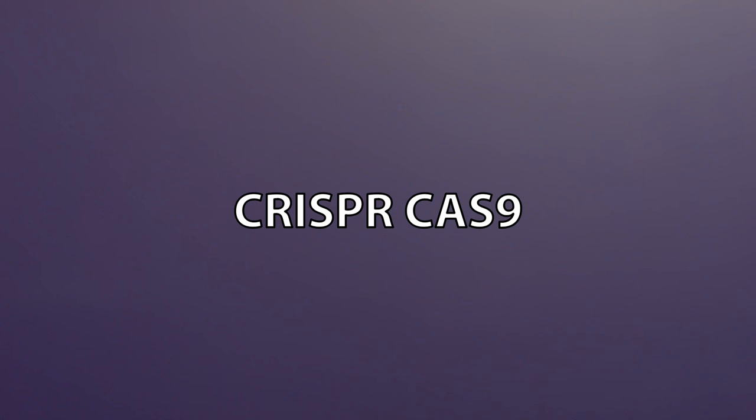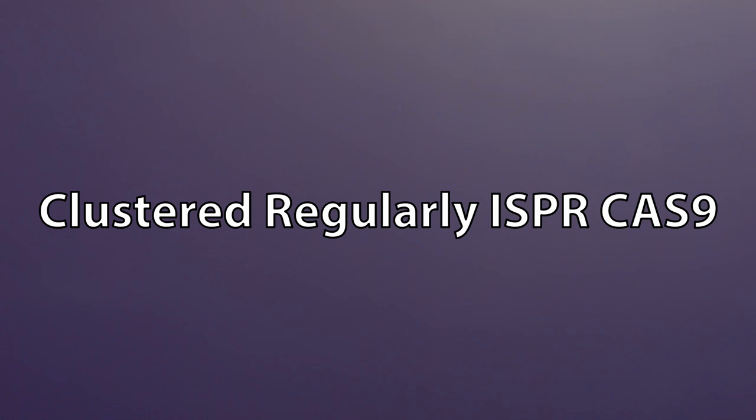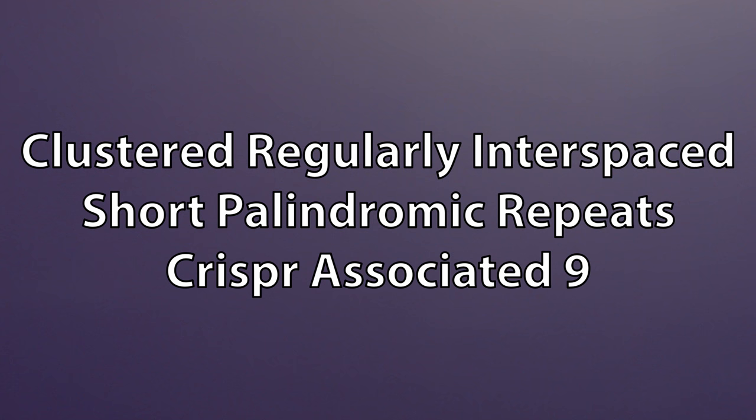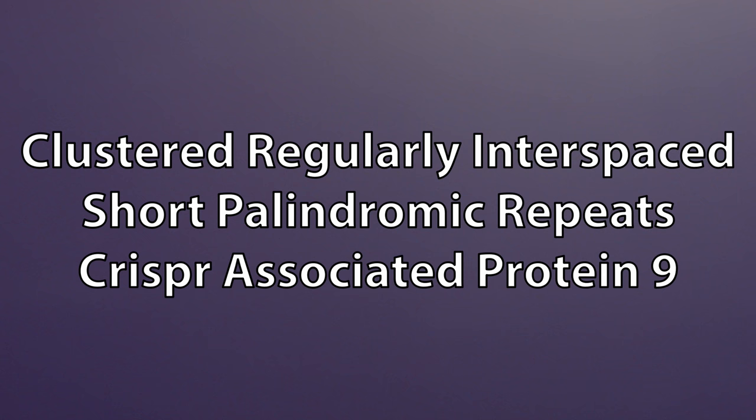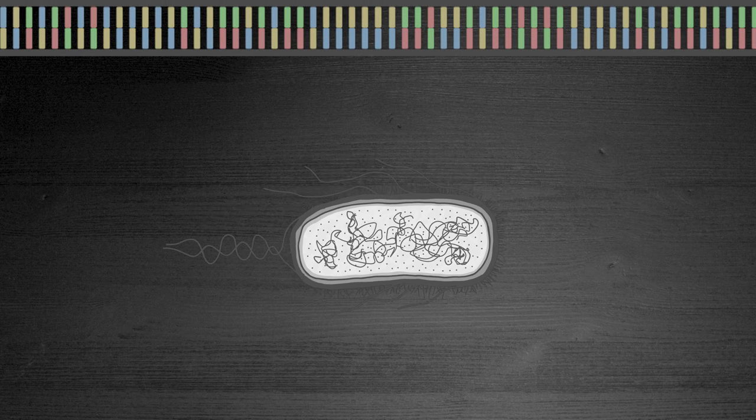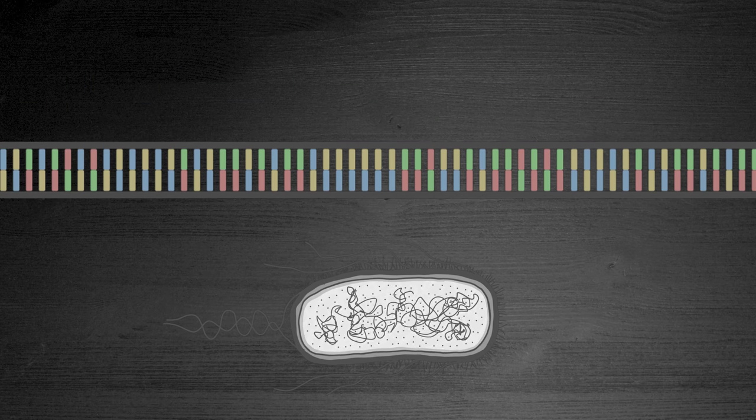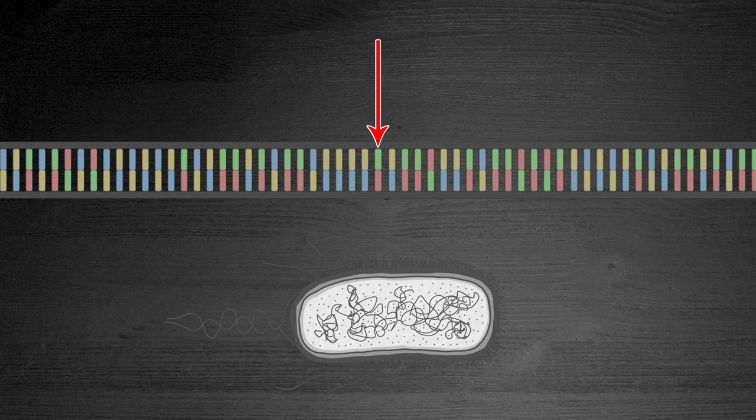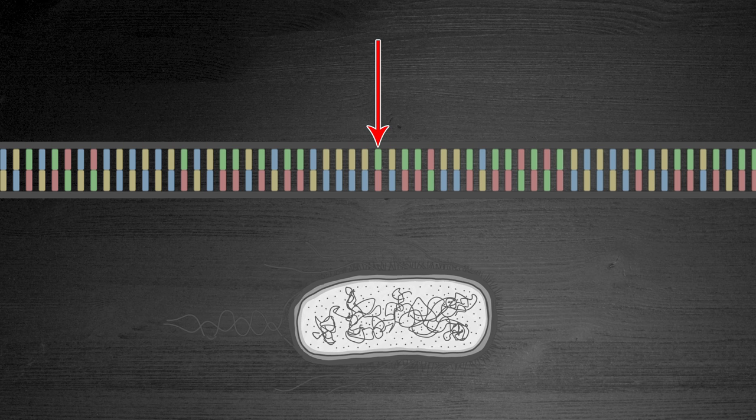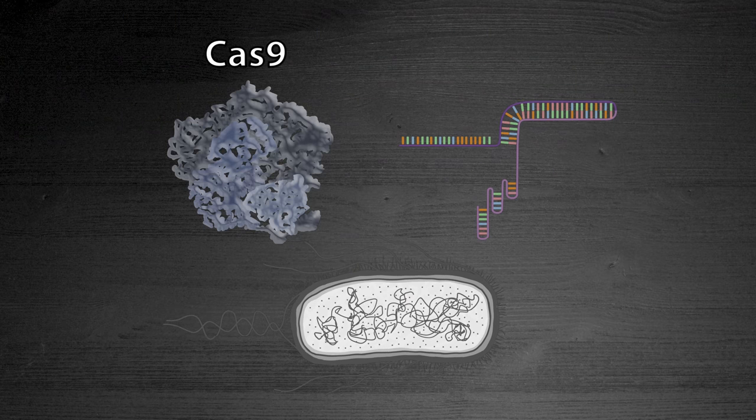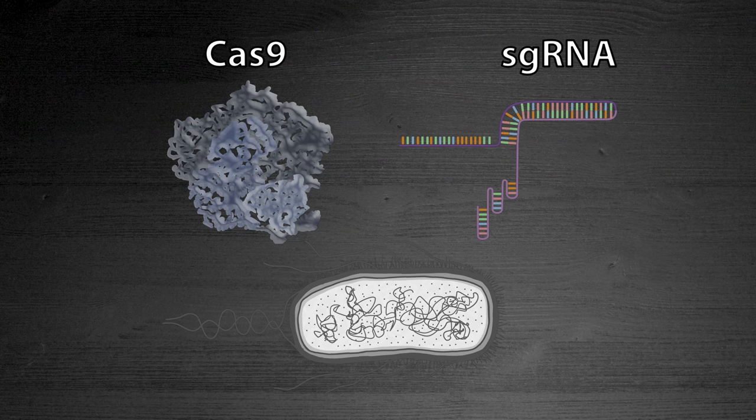CRISPR-Cas9 are acronyms for Clustered Regularly Interspaced Short Palindromic Repeats and CRISPR-Associated Protein 9. This method is derived from the immune defense system of bacteria. This strain of E. coli has over 4 million base pairs, and the CRISPR-Cas9 process will result in a change in just one of them. Here's how CRISPR works in this experiment. The E. coli, because of the plasmids we introduce, start producing the Cas9 protein and the guide RNA, or sgRNA.